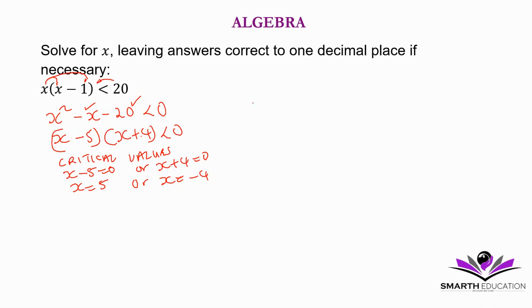So we have our x axis. y is equal to 0 on the x axis. And then we have the critical values. We have negative 4 here, x is equal to negative 4, and x is equal to 5.